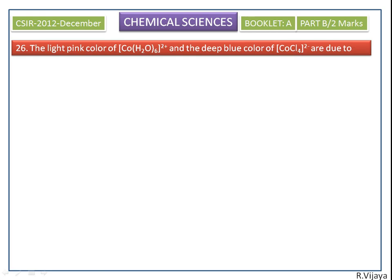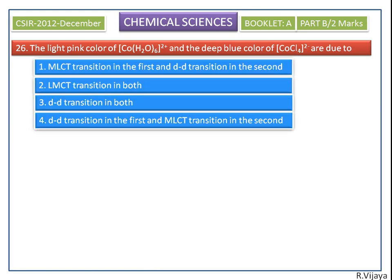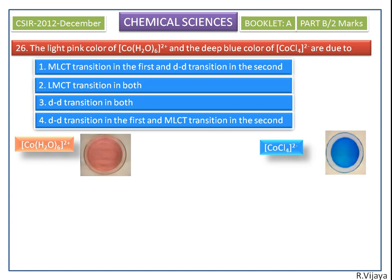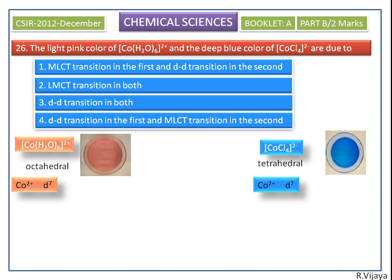The question is: the light pink color of hex aqua cobalt(II) complex and the deep blue color of tetrachloro cobalt(II) complex are due to which reason? We can see that the hex aqua cobalt(II) complex is octahedral in nature, while the tetrachloro cobalt(II) complex is tetrahedral in nature. Both have a valence electronic configuration of 3d⁷, because cobalt exists in the +2 oxidation state in both complexes.